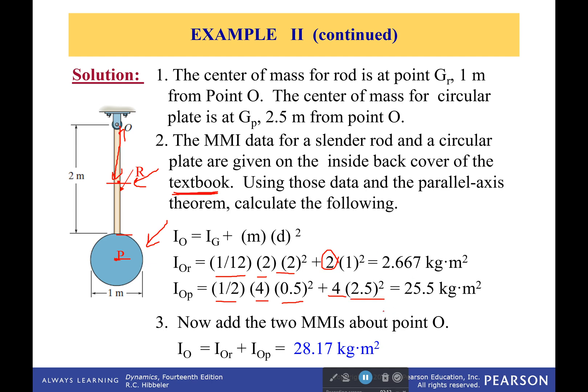So I add all those together and I get that my overall moment of inertia is 28.17 kilogram meters squared. And that's it. You're done.